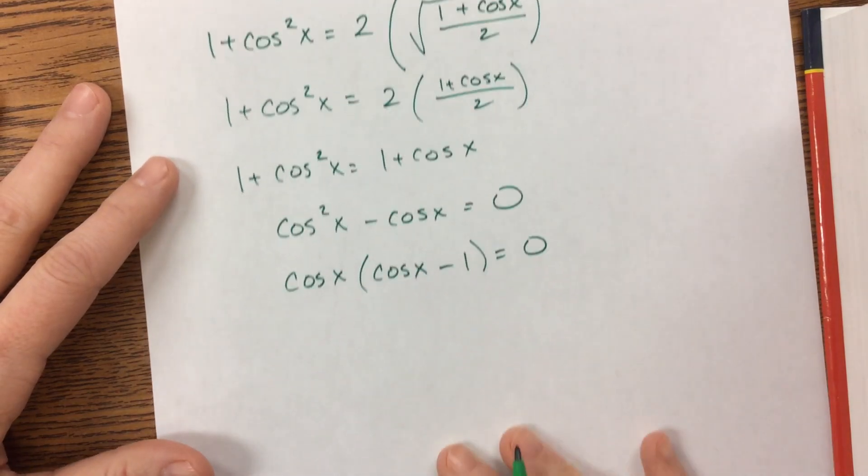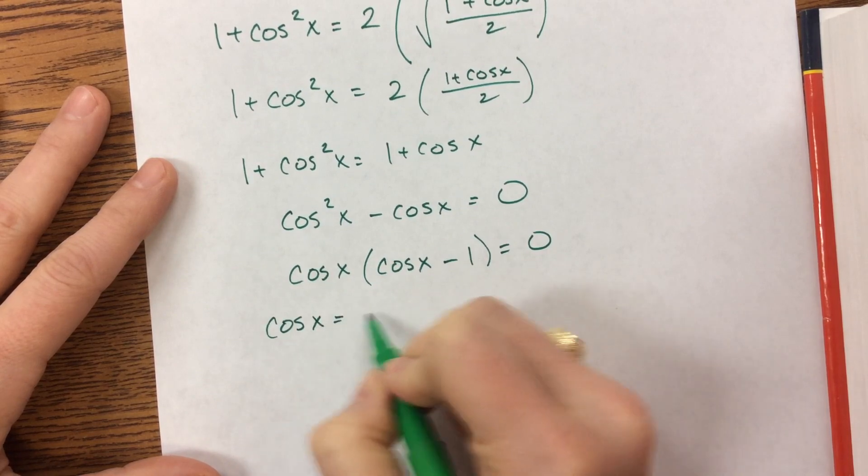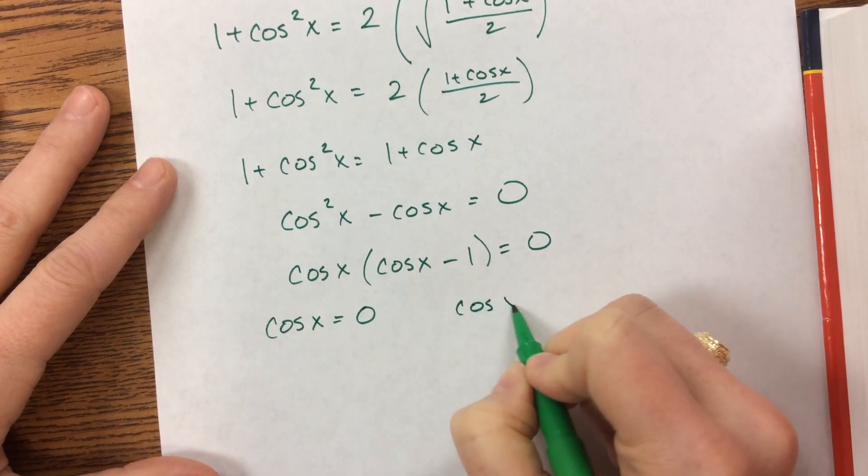And now I am back to the problems that I have seen before. Factor out the cosine. Then that means that cosine of x either needs to equal 0 or it needs to equal 1.